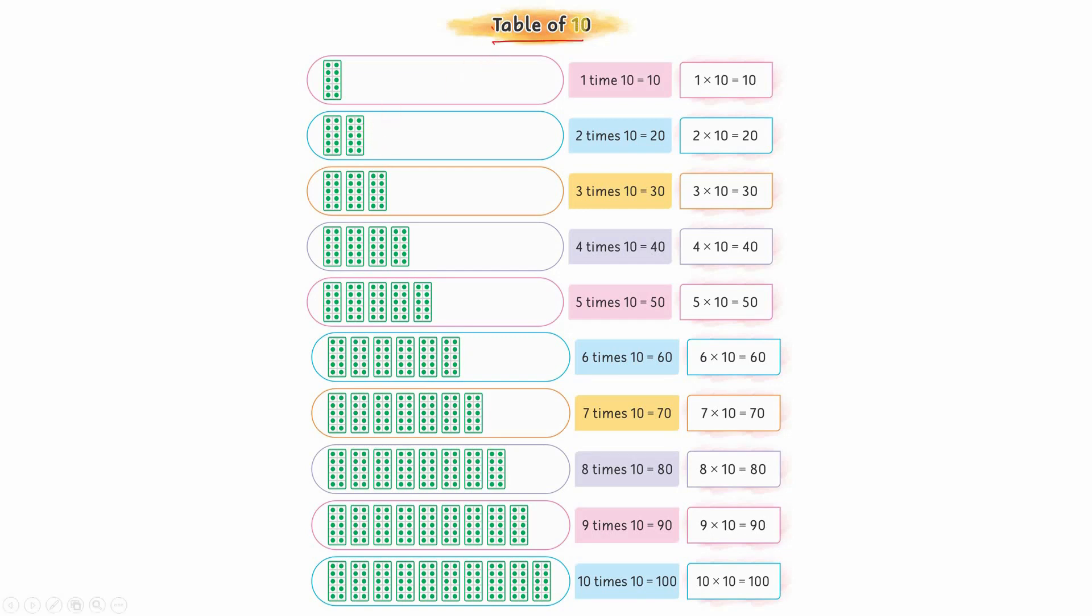So aaj hum 10 ka table seekhenge. We have already learned tables of 2, 3, 4, 5. Today we will learn the table of 10. Learning the table of 10 means it's related to the counting in tens that you studied earlier.